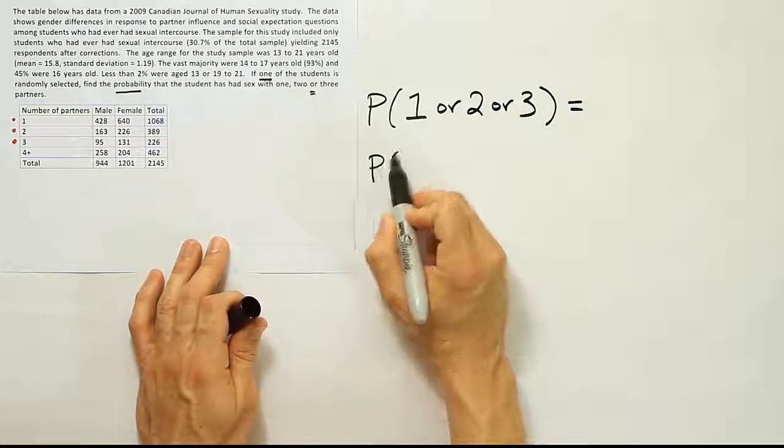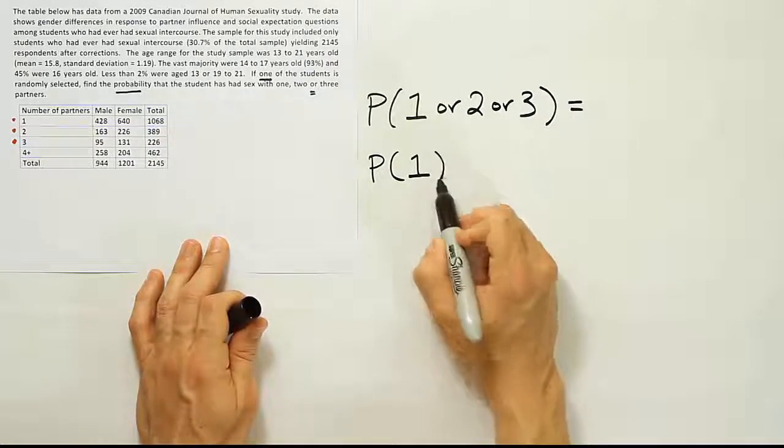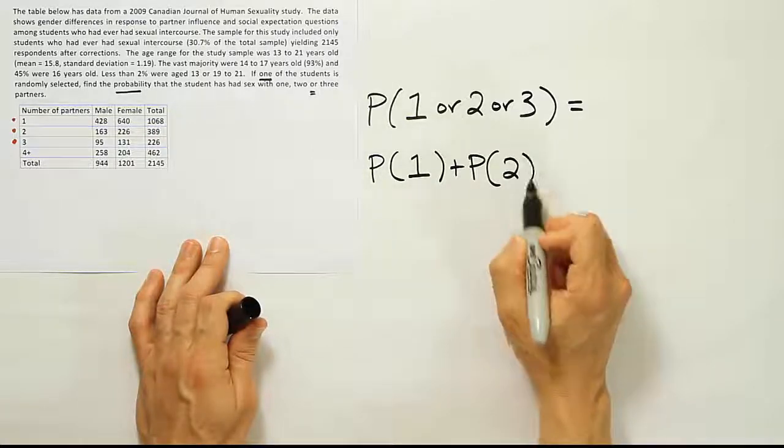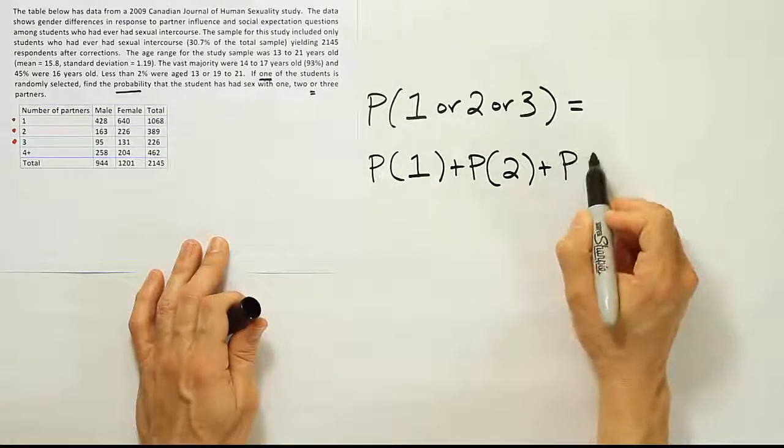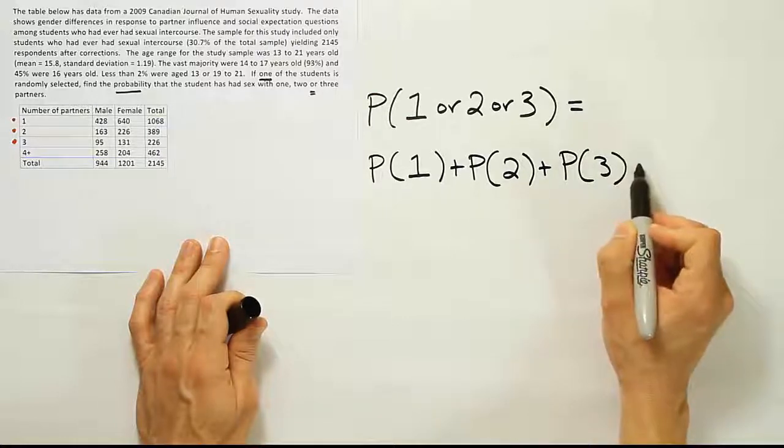then all we have to do is the probability that they've had sex with one partner plus the probability that they've had sex with two partners plus the probability that they have had sex with three partners. And that's it.